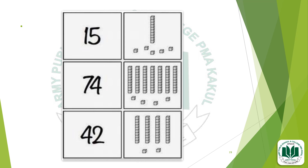Some more examples: 1, 5 — 15. And 7, 4 — 74 means 7 tens and 4 ones. In 42, there are 4 tens and 2 ones.